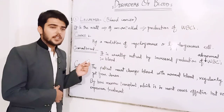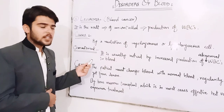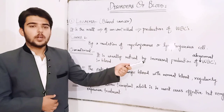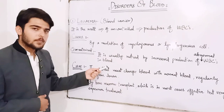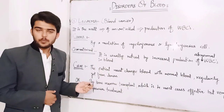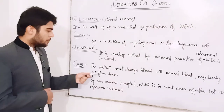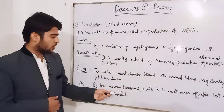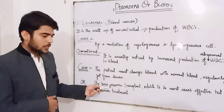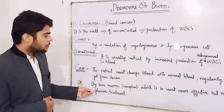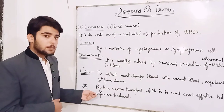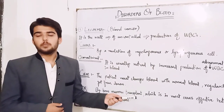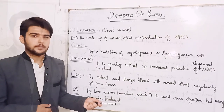How is it characterized? It is usually noticed by increased production of abnormal white blood cells in blood. What is the cure? The patient must change blood to normal blood regularly, obtained from donors, or it can be cured by bone marrow transplant, which is in most cases effective, but very expensive treatment.